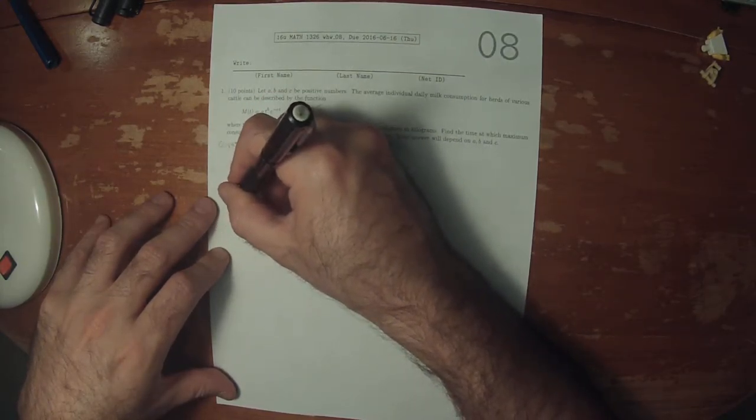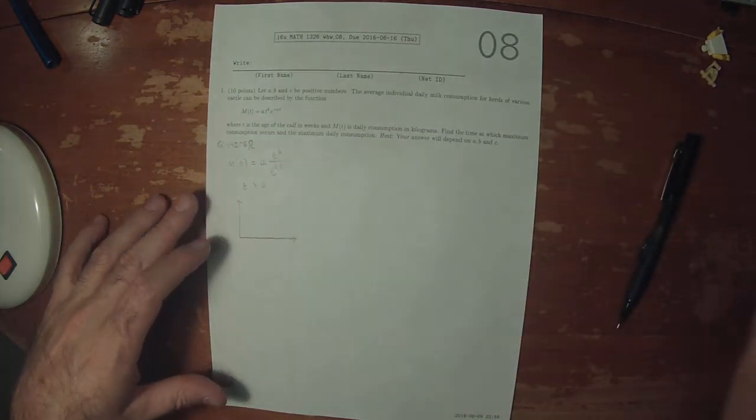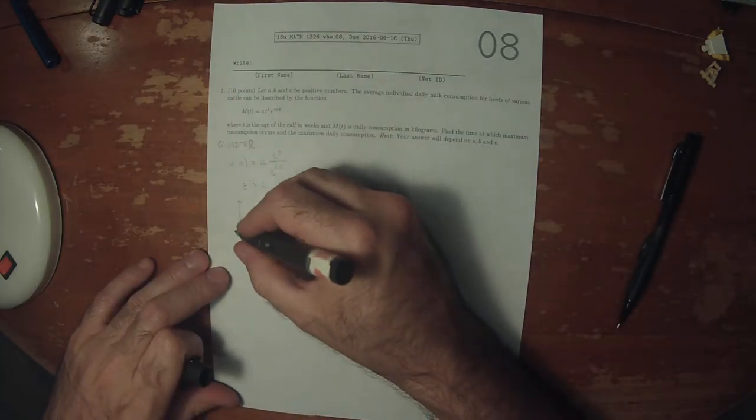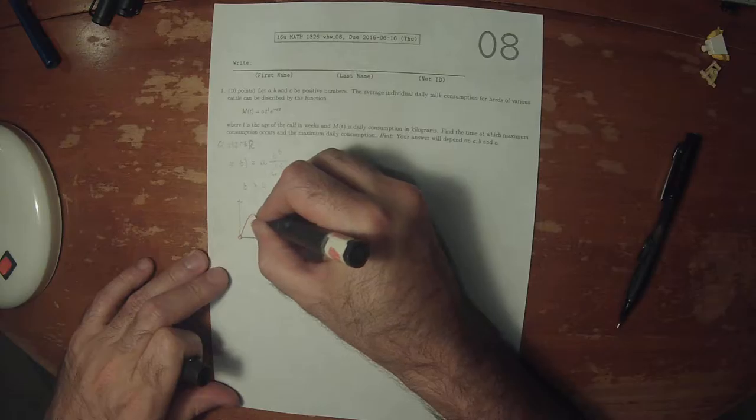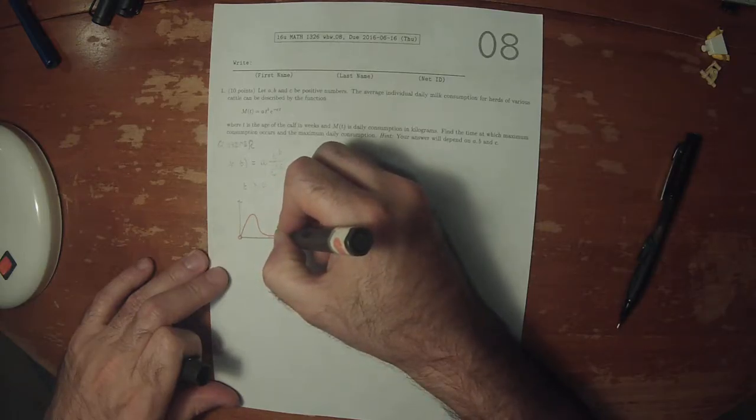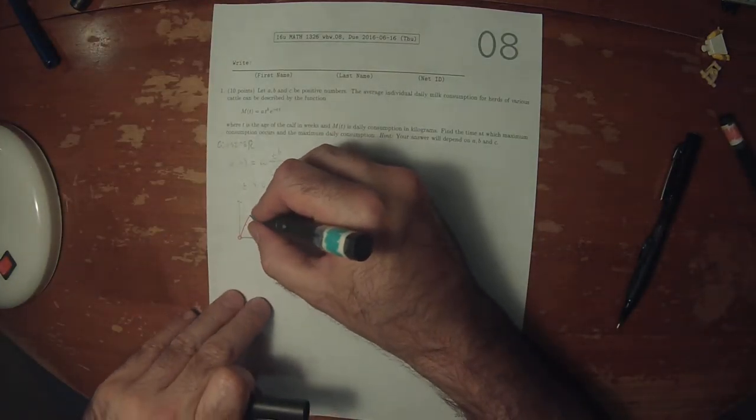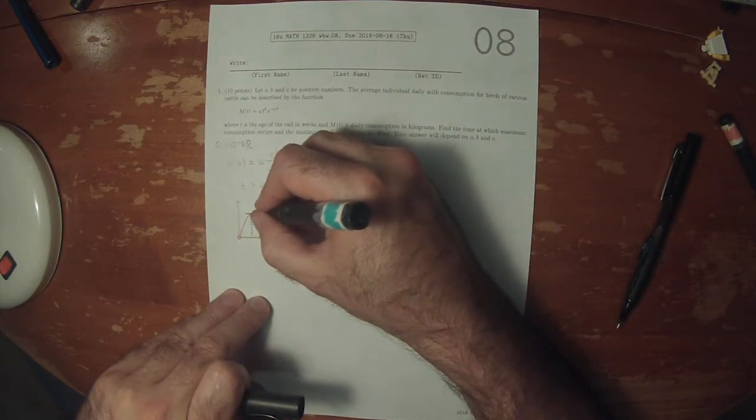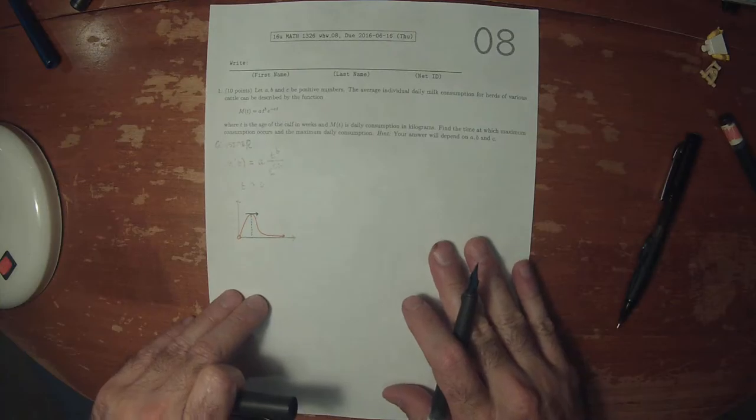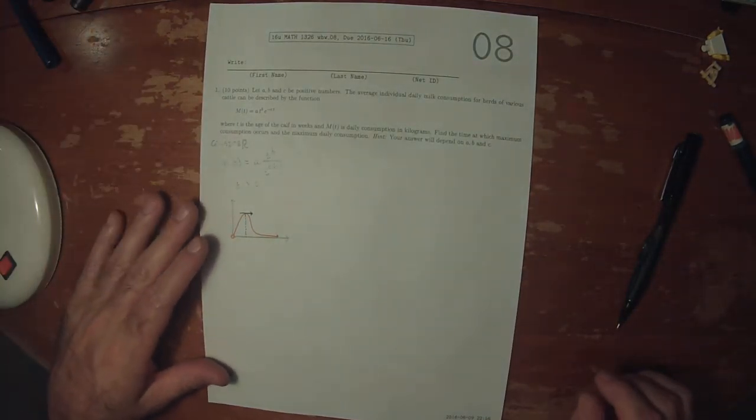So the function is expected to look like this, with a stationary point somewhere here. Okay, so let's see if that expectation pans out.